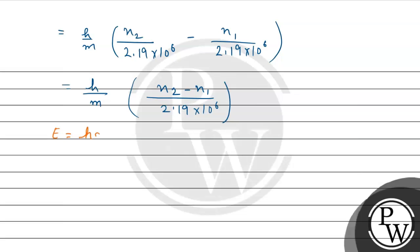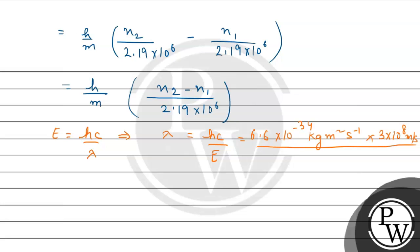The energy of the photon is E = hc/λ, so the wavelength λ = hc/E. Here H is Planck's constant and C is the speed of light. The energy is given in electron volts, so we convert it to Joules by multiplying by 1.6 × 10⁻¹⁹.